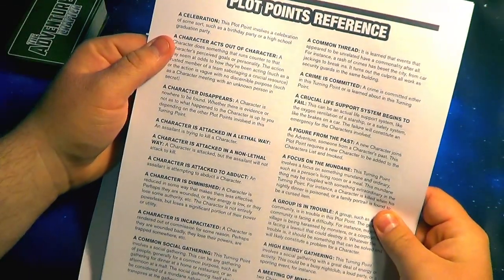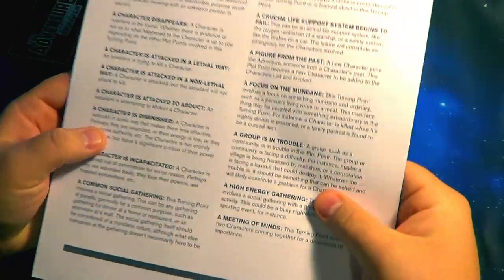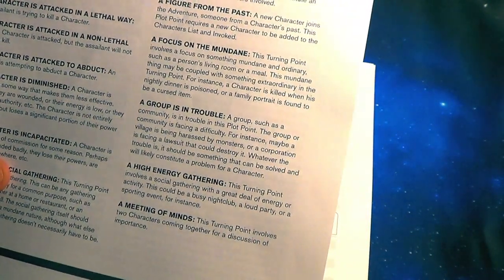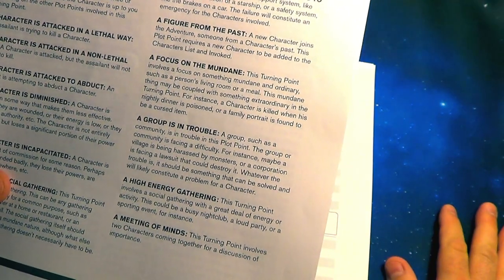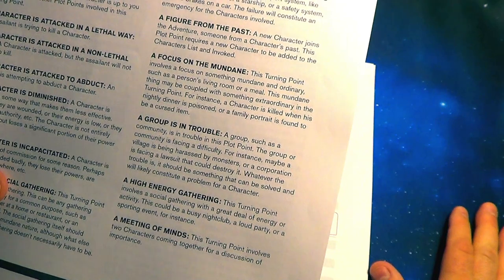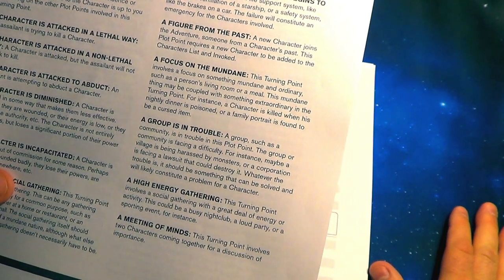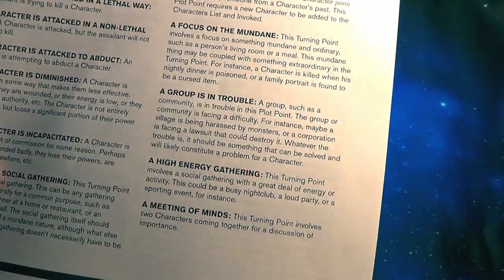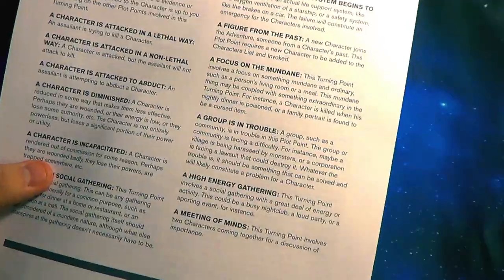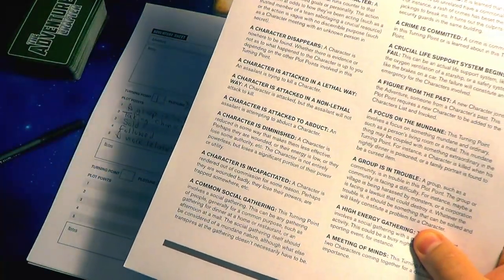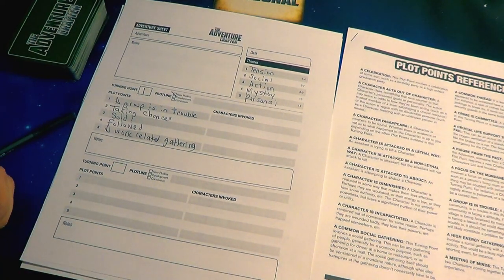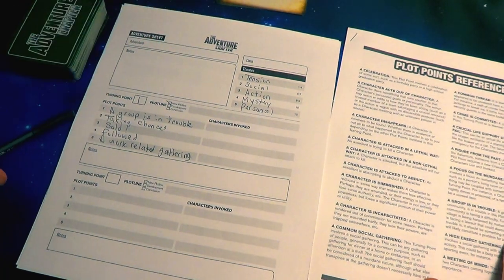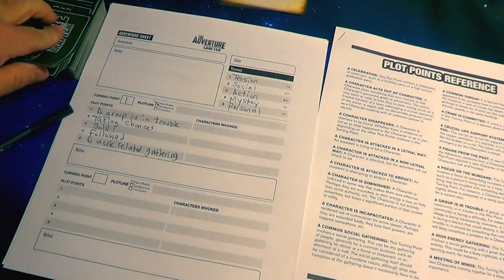'A group is in trouble' — so a community is facing a difficulty. For instance, maybe a village is being harassed by monsters, or a corporation is facing a lawsuit. Whatever the trouble is, it should be something that can be solved and will likely constitute a problem for a character. So it's telling me something is being troubled by something. I don't know what the community is here, so I'm going to draw two cards. They give a descriptor and an identity.